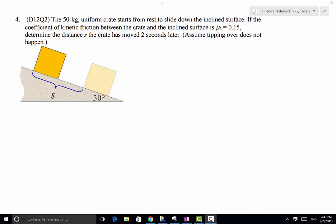In this problem we have a 50 kilogram uniform crate that's sliding along this inclined surface from rest. We know the coefficient of kinetic friction between the crate and the inclined surface is 0.15, and we need to determine the distance the crate has moved two seconds later. This distance is also along the inclined surface, and we're assuming tipping over does not happen.